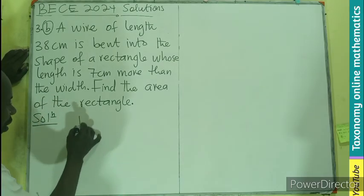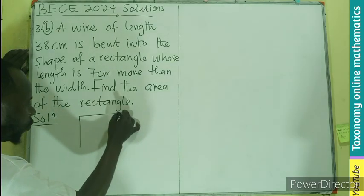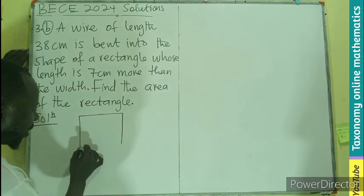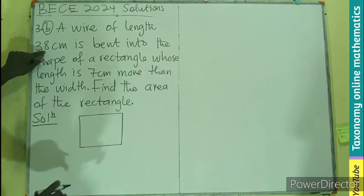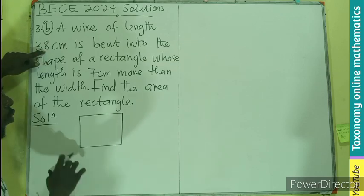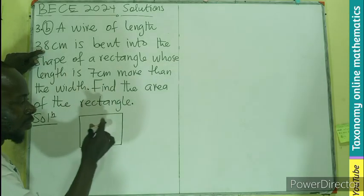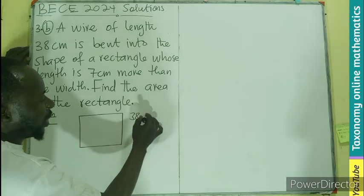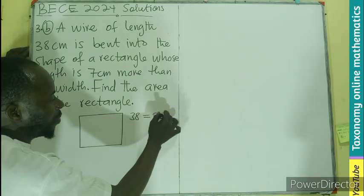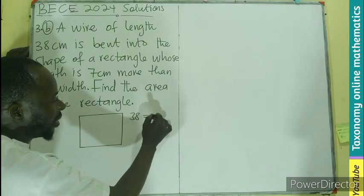So let's make a sketch of what that wire will be. If the wire is here, we fold it, it continues, it comes here. So all of them give us 38. So that shows the perimeter. The 38 that we are looking for is actually the perimeter.